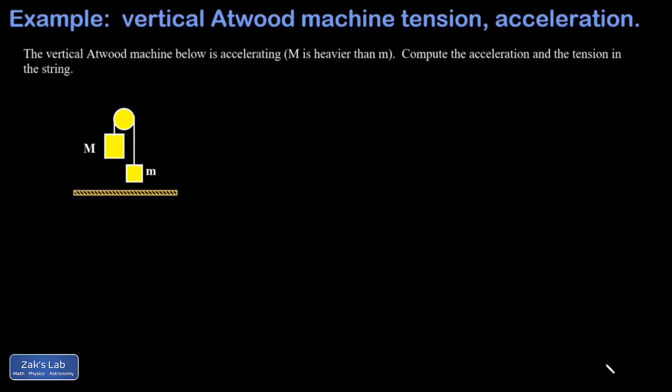In this video we're looking at a vertical Atwood machine. It's assumed that the string is light and the pulley is light and frictionless. We're told that big M is heavier than little m, so we know which way the system is accelerating. We want to compute the acceleration in terms of M, m, and g, and the tension in the string as well.